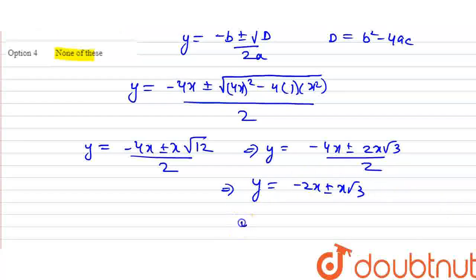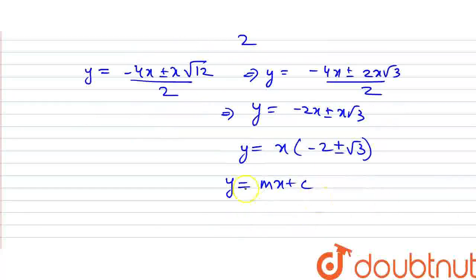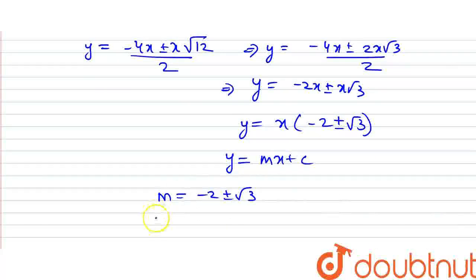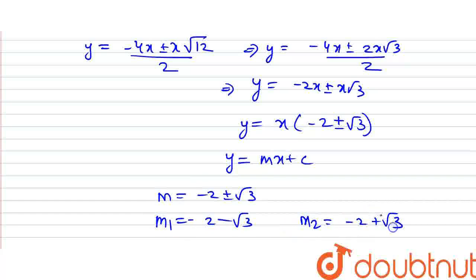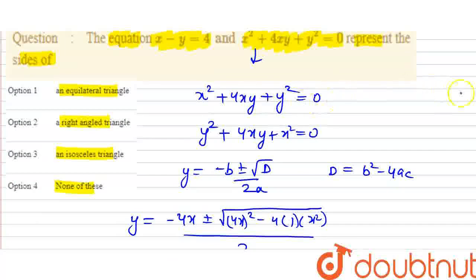So y equals x times (minus 2 plus or minus root 3). In the general form of a line y equals mx plus c, comparing the slopes: m equals minus 2 plus or minus root 3. So we have two slopes: m1 equals minus 2 minus root 3, and m2 equals minus 2 plus root 3.